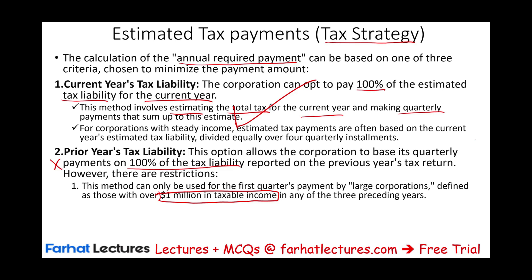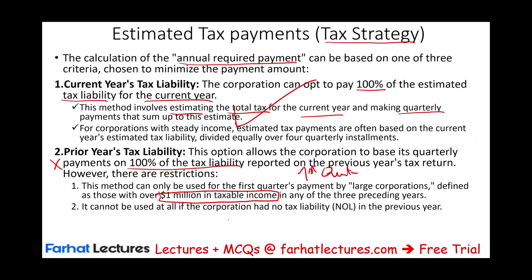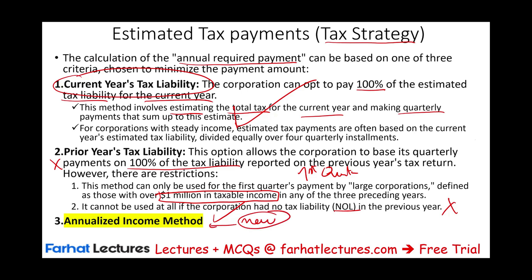Large corporation means if you have $1 million or more in taxable income in any of the prior three years, you cannot use this method. This method is still allowed for only the first quarter. Also, it cannot be used if you have an NOL in the prior year — if you have an NOL, you cannot use the prior year tax liability. You could either try to estimate your current tax liability or use the annualized income method, which is what we will discuss in this session.